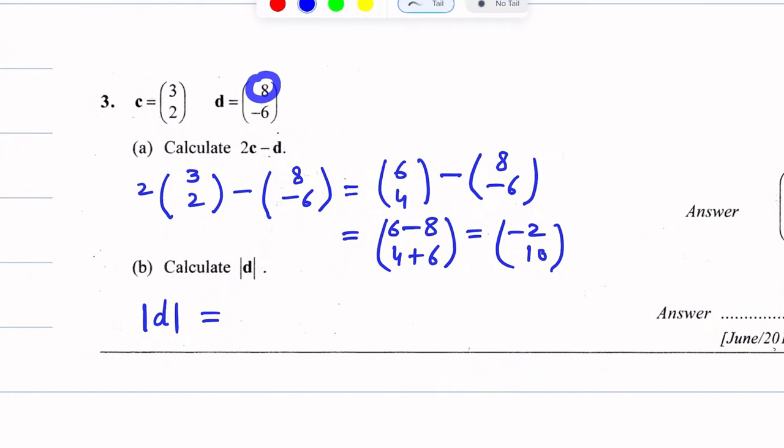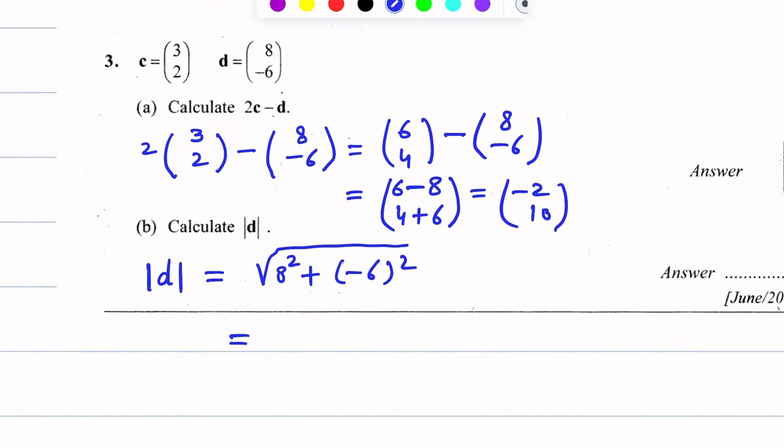The components of d are 8 and -6. We take the square of 8 and the square of -6, add them, and take the square root. This becomes √(8² + (-6)²), which equals √(64 + 36).